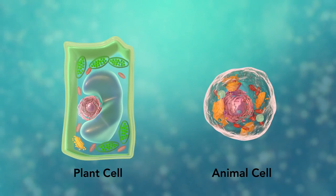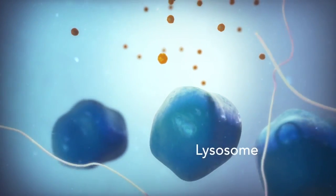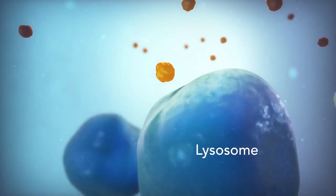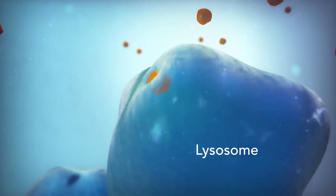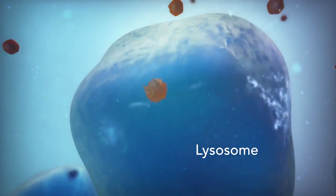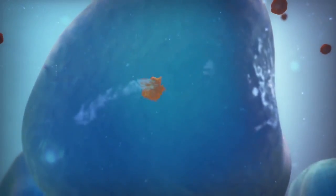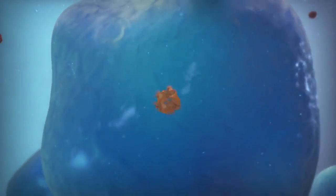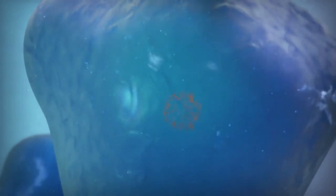Going back to the animal cell, you will see an organelle called a lysosome. Lysosomes are the garbage collectors that take in damaged or worn-out cell parts. They are filled with enzymes that break down this cellular debris.